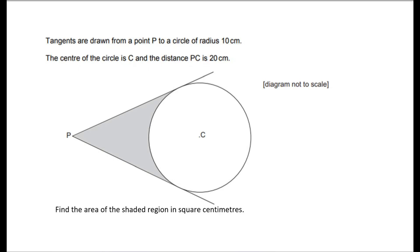Tangents are drawn from a point P to a circle of radius 10 centimetres. The centre of the circle is C and the distance PC is 20 centimetres. Find the area of the shaded region in square centimetres.